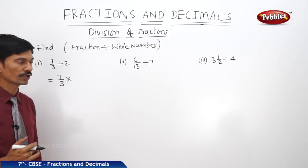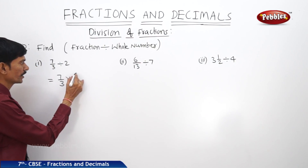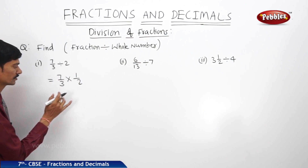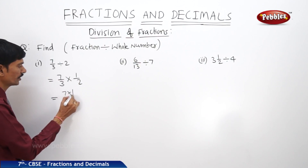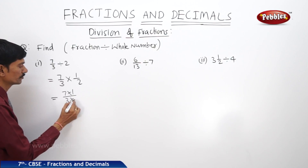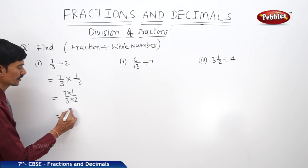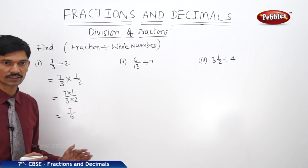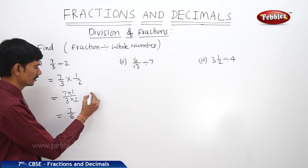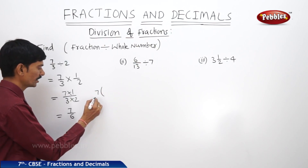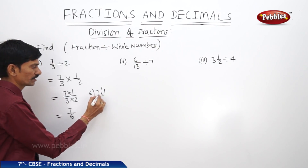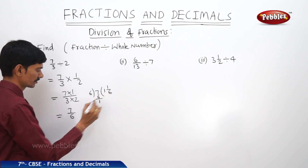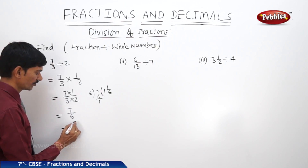The reciprocal of 2 is 1/2. So we multiply both numerators and both denominators: 7×1 / 3×2 = 7/6. This is an improper fraction. Dividing 7 by 6 gives 1 with remainder 1, so this equals 1⅙.